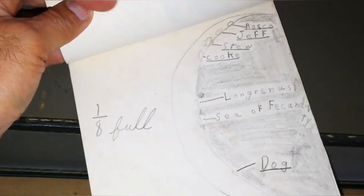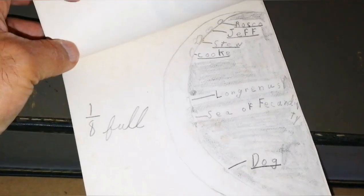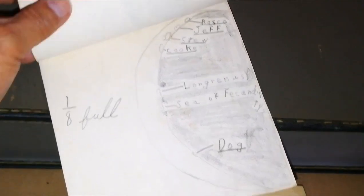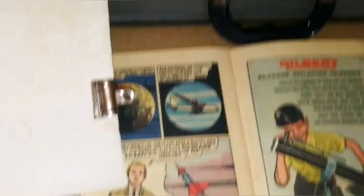One eighth full. That's a crescent, very thin crescent. That's amazing. It's like finding something that Galileo has produced. That's so sweet.